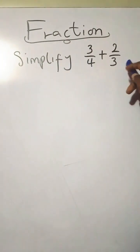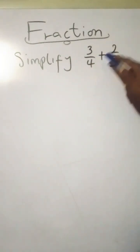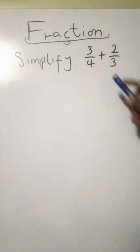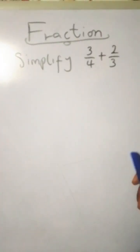Now to simplify this fraction 3 over 4 plus 2 over 3. Observing the denominators, you notice they don't have anything in common except one.